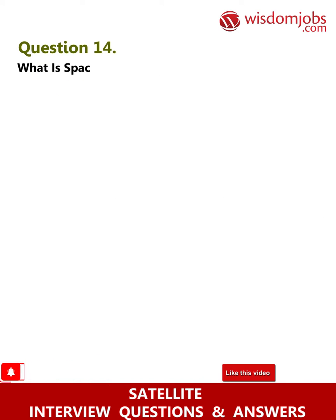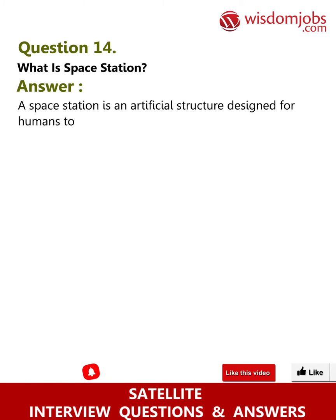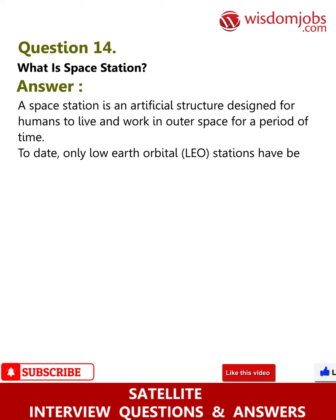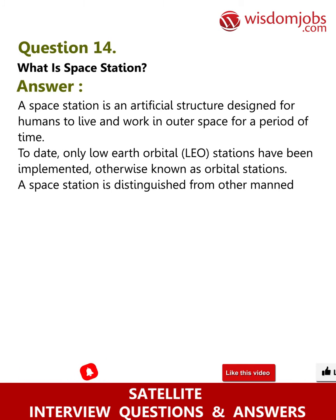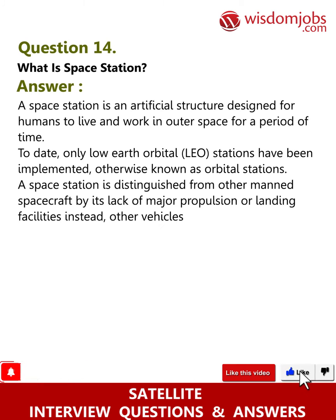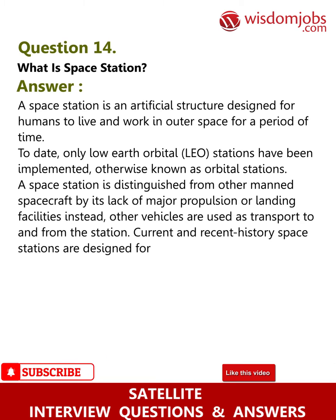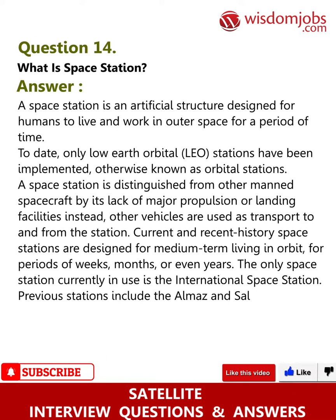Question 14: What is a space station? Answer: A space station is an artificial structure designed for humans to live and work in outer space for a period of time. To date, only low-Earth orbital stations have been implemented. A space station is distinguished from other manned spacecraft by its lack of major propulsion or landing facilities; instead, other vehicles are used as transport to and from the station. Current space stations are designed for medium-term living in orbit for periods of weeks, months, or even years. The only space station currently in use is the International Space Station. Previous stations include the Almaz and Salyut series.